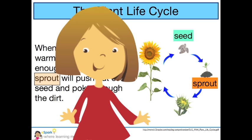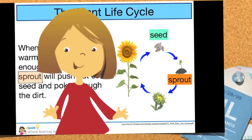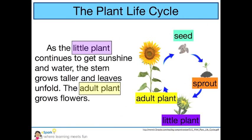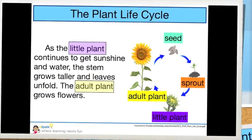I can tell this part of the diagram shows the sprout because I can see the tiny little plant pushing up through the dirt, just like the text says. Let's read the last paragraph. As the little plant continues to get sunshine and water, the stem grows taller and leaves unfold. The adult plant grows flowers.